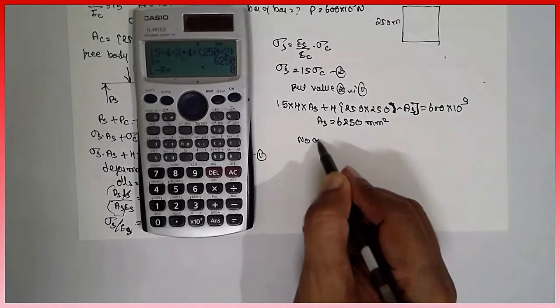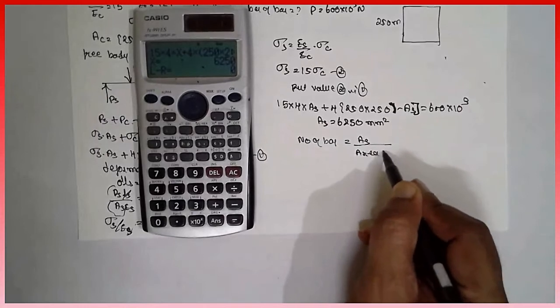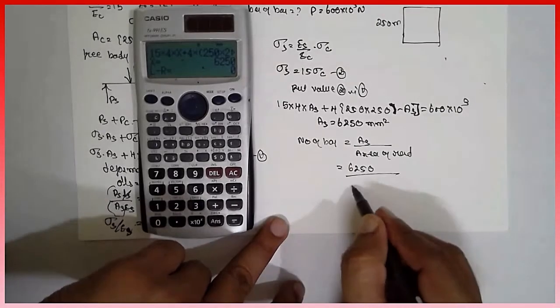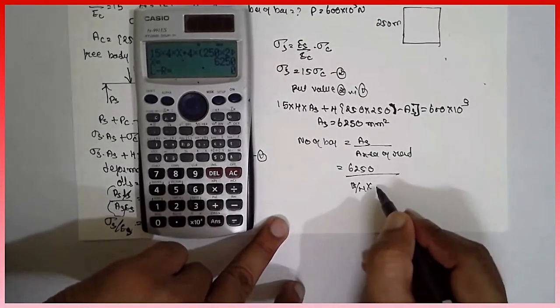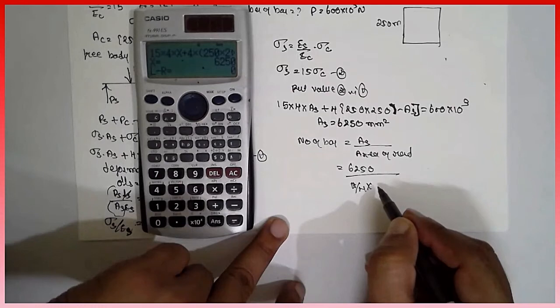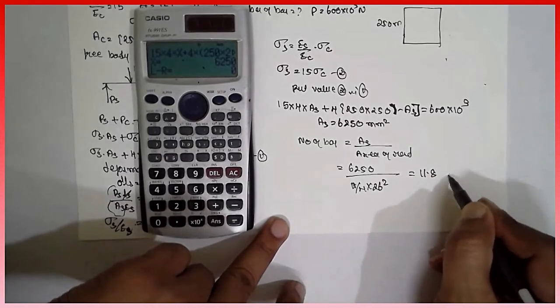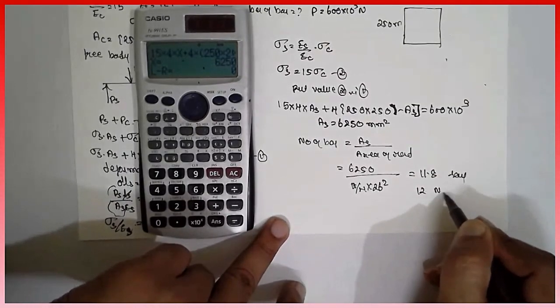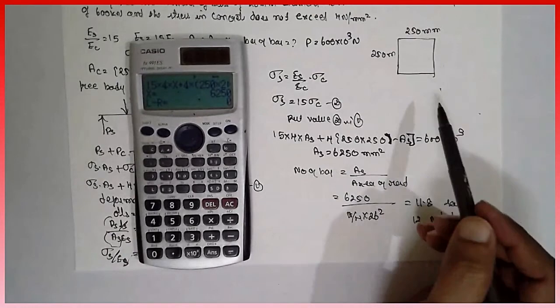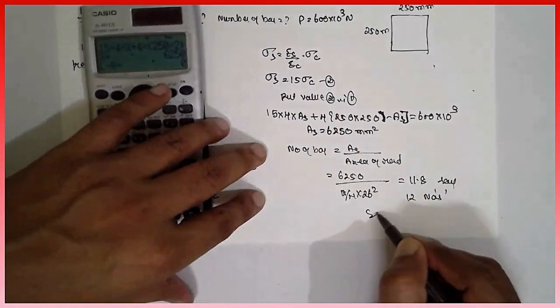Number of bars, nothing but As divided by area of the rod. 6250 divided by pi by 4 into diameter, area of the rod. Diameter is nothing but they are given 26, 26 square. Answer will be 11.8, say 12 number. That means in this concrete, the 12 number of rods are required in order to sustain this load. I am Satosh Gadankar. Thank you very much.